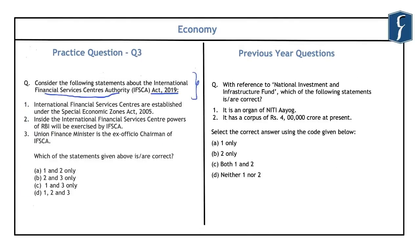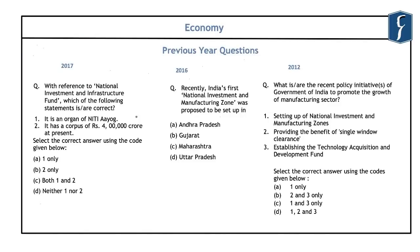The third practice question is related to the International Financial Services Centre's Authority Act of 2013, which aims at attracting investments in the industrial sector. Previous year questions on industrial sector development were asked in 2017, 2016 and 2012. The 2017 question on the National Investment and Infrastructure Fund asked whether it is an organ of NITI Aayog and whether its corpus is rupees 4 lakh crores. Both statements are incorrect — it is not an organ of NITI Aayog, and it initially had a corpus of only rupees 40,000 crore. The correct answer was D.